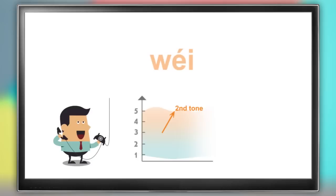When u-e-i wei stands on its own, it's spelled w-e-i. We learned before that when you answer the phone in Chinese, you say wei, right? Hello, wei.